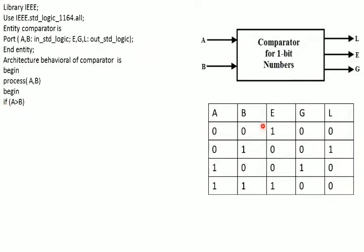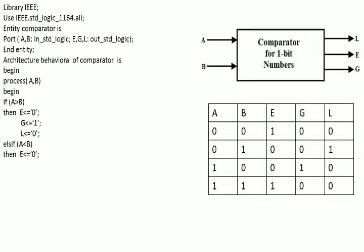If this condition is satisfied, greater is going to be 1, equal is going to be 0, and less is going to be 0. So the output terms are: equal = 0, greater = 1, less = 0. If this condition is not satisfied, we come to the second condition: else if A is less than B. In this case, equal becomes 0, greater becomes 0, and less becomes 1.